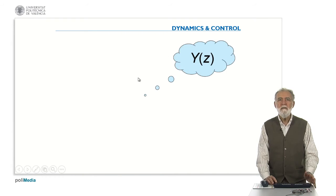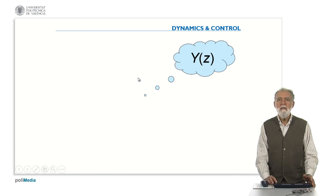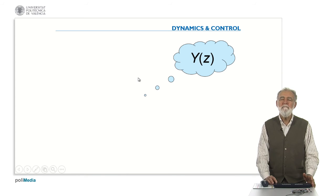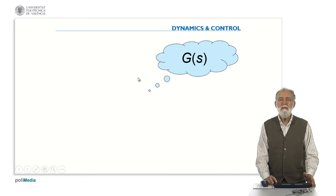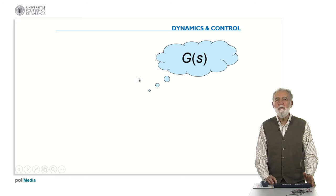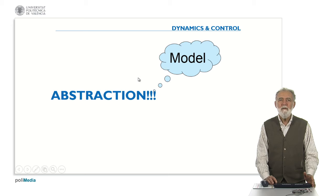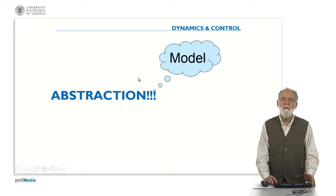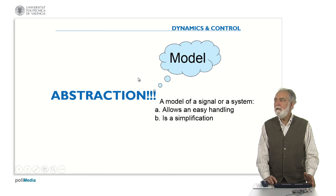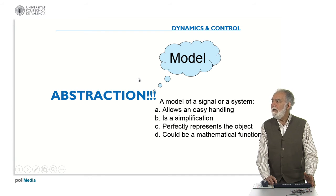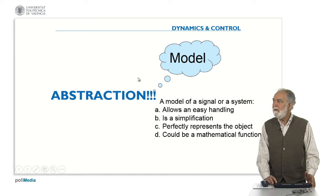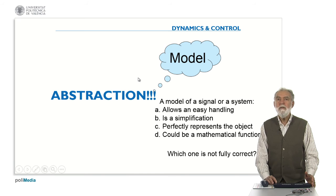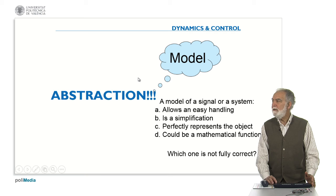So the first question is, you remember we had a signal and we tried to express it in a compact form. We had a system and we also tried to get a model. In general we have an abstraction of either a model, a process or a signal and we tried to get a model. So the first question is, a model of a signal or a system allows an easy handling of the model or the signal, is a simplification, perfectly represents the object, and it could be a mathematical function. So which one of these four answers is not fully correct?